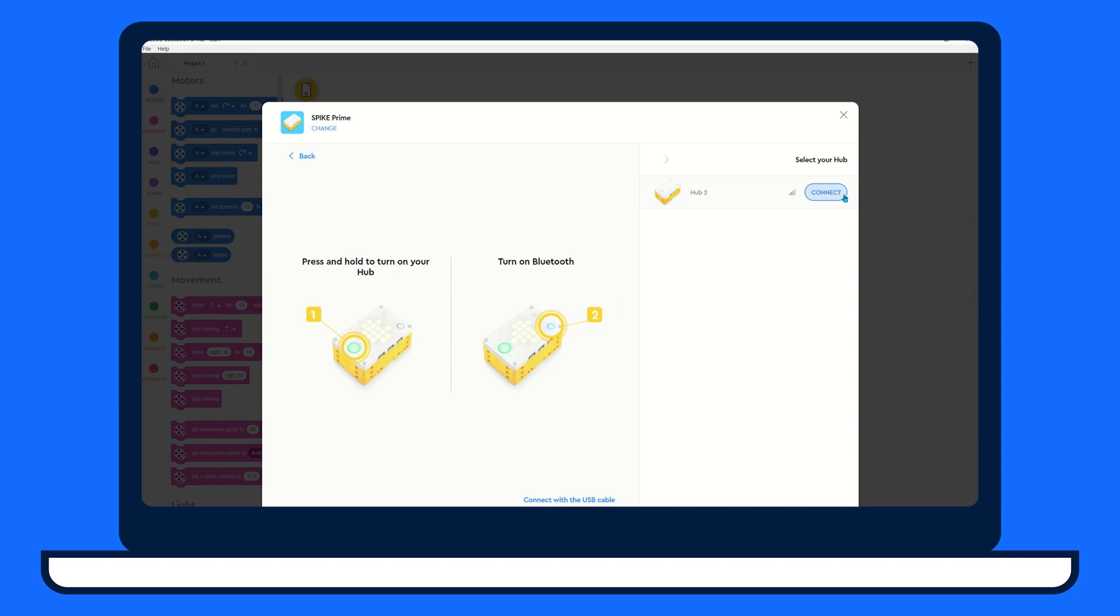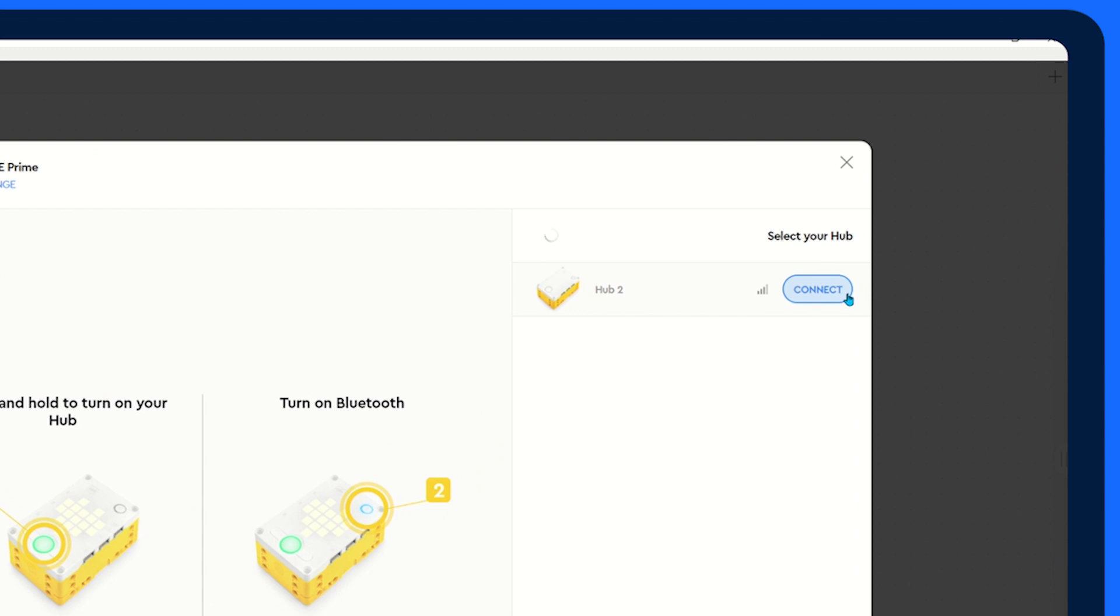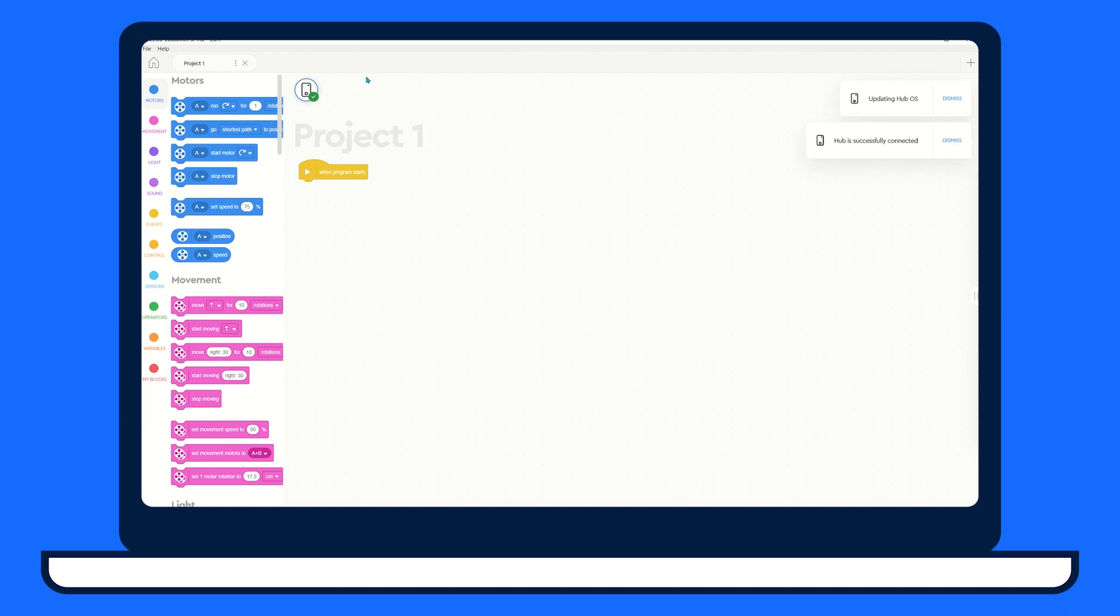If your center button is green, your hub is up to date and can be connected via Bluetooth. Go ahead and press the connection button to enable Bluetooth. You will see your device appear in a column on the right hand side of the screen.